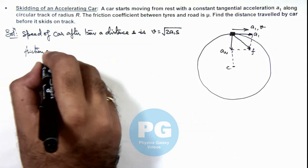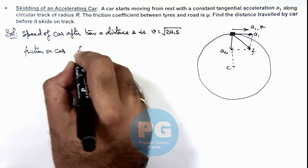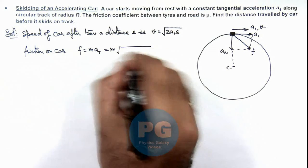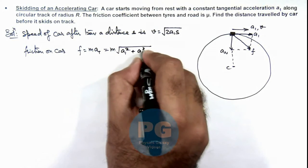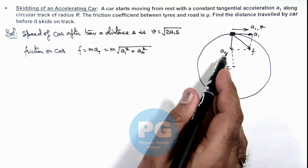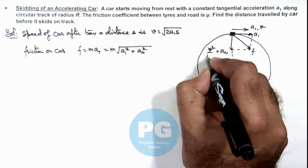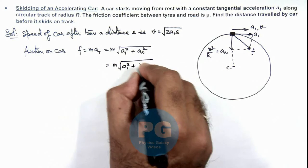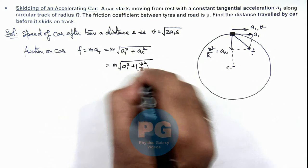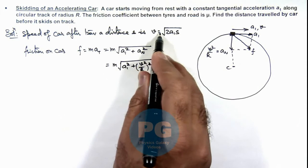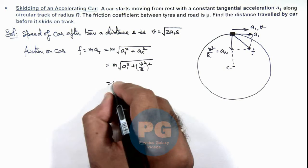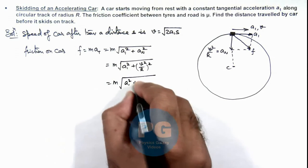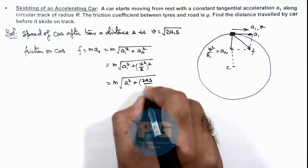And friction on car can be written as m multiplied by the total acceleration, which can be written as √(a_t² + a_n²). And we know that normal acceleration is always equal to v²/R. So we substitute this as m√(a_t² + v²/R). And we can substitute the value of v² as 2a_t s. So the value of friction we are getting is m√(a_t² + (2a_t s/R)²).